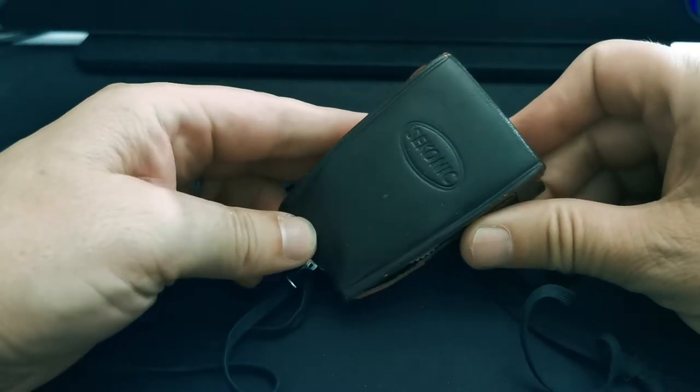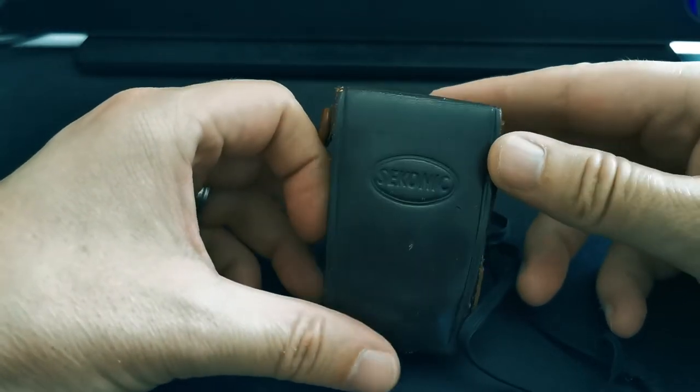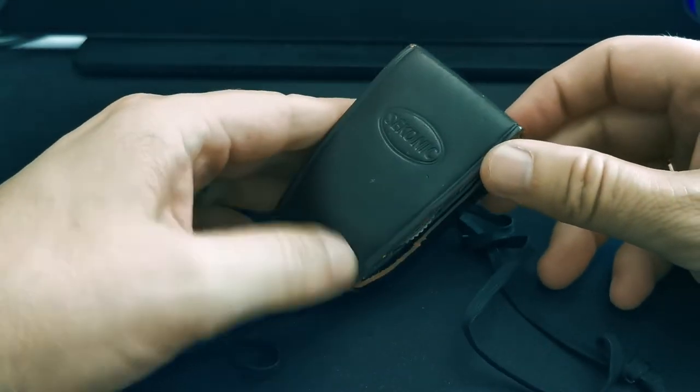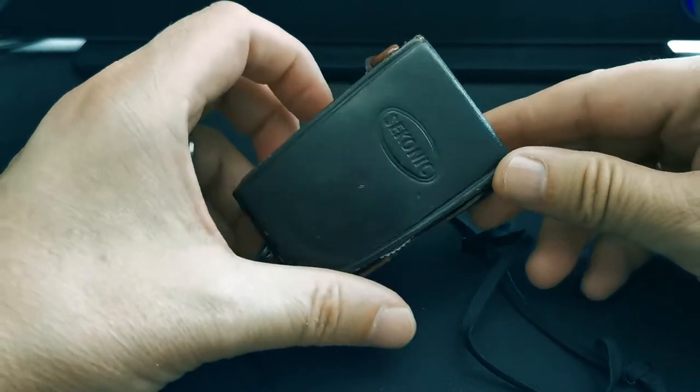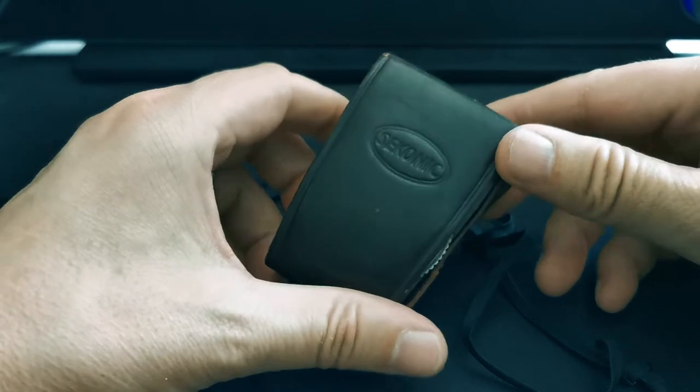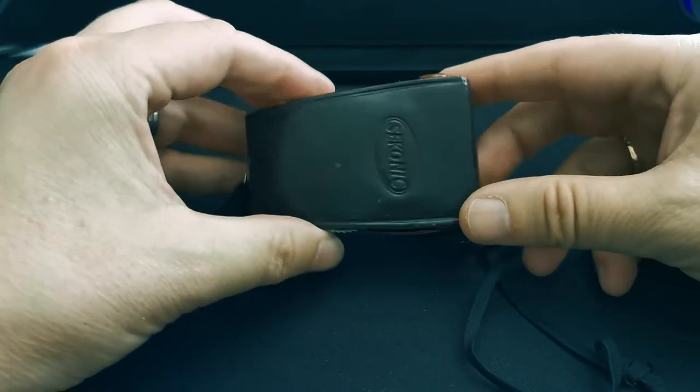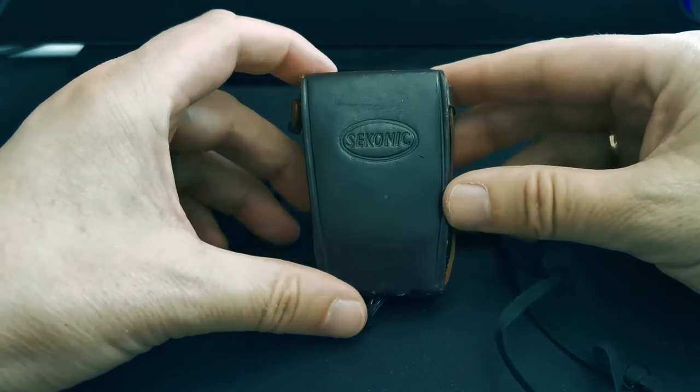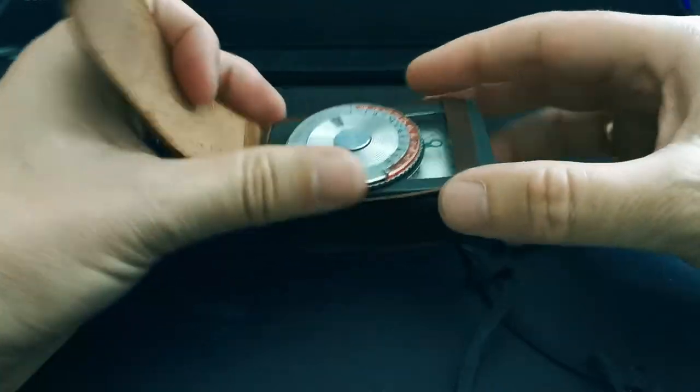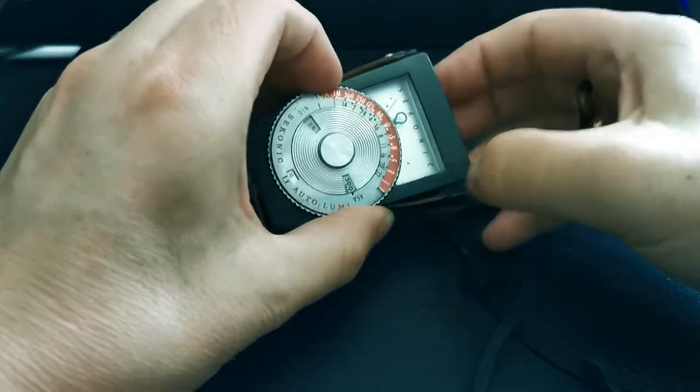Right, so here we have a vintage light meter made by Sekonic of Japan. This one dates from about 1968 and it's the Auto Lumi 86. Very simple but quite useful to demonstrate the functionality. Even modern light meters that are digital and everything else, the basic function of them is exactly the same. So I'm going to take it out of its case just so that it's going to make it a little bit easier for you to see what's going on.